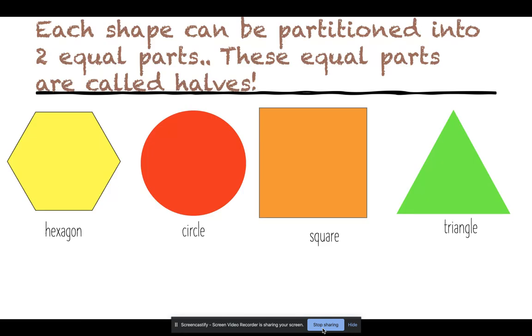Each shape can be partitioned into two equal parts. These equal parts are called halves. In order for it to be a half, both sides have to be exactly the same.